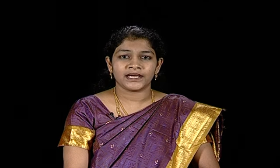Beta sheet. The hydrogen bonding in a beta sheet is between strands — that is, interstrand — rather than within the strands, that is intrastrand. The sheet conformation consists of pairs of strands lying side by side. The carbonyl oxygens in one strand hydrogen bond with the amino hydrogens of the adjacent strand. The two strands can either be parallel or antiparallel depending on whether the strand directions (N-terminus to C-terminus) are the same or opposite. The antiparallel beta sheet is more stable due to the more well-aligned hydrogen bonds.